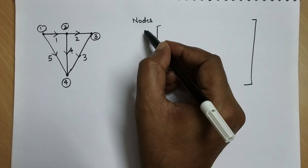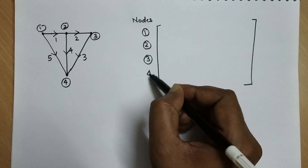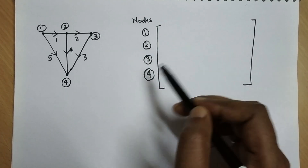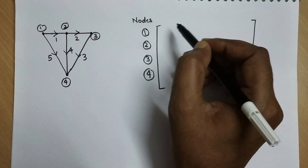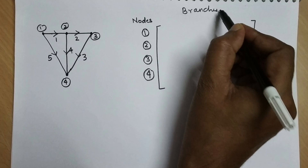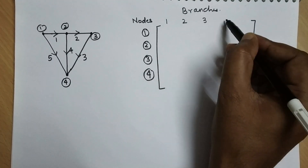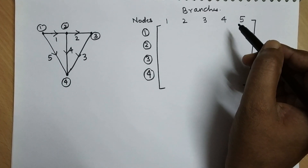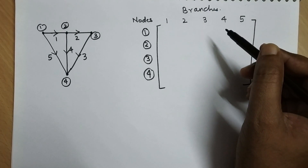To write the incidence matrix we take rows and columns. The number of rows equals the number of nodes — so we have first, second, third, and fourth rows for the four nodes. The total number of branches is five, so we write branches one, two, three, four, and five as the columns.